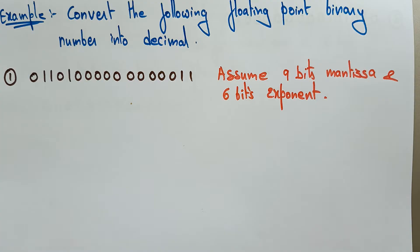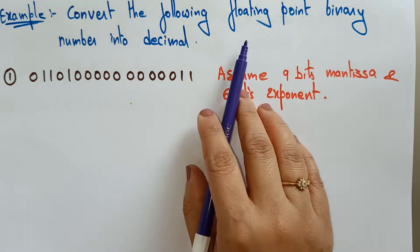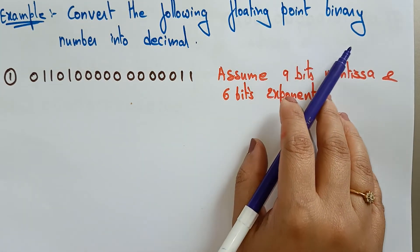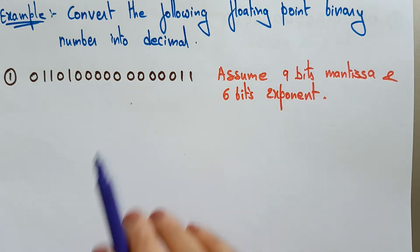If you are having any doubts in the floating point representation, just comment in the comment section — I'm here to help you. If you want more examples, I'm here to provide those too. Now let's have a look: convert the following floating point binary number into decimal.